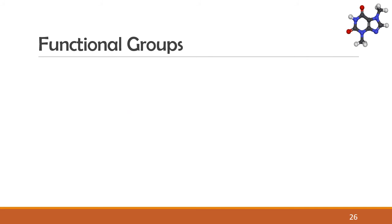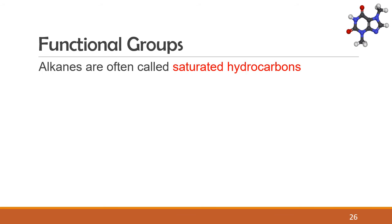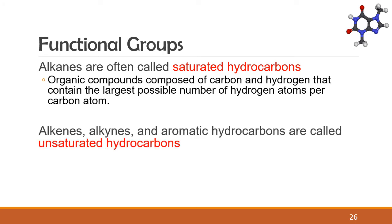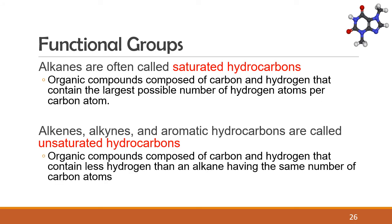There are a couple of important terms you should be familiar with. Alkanes are often called saturated hydrocarbons. This means that these compounds are composed of carbon and hydrogen containing the largest possible number of hydrogen atoms per carbon atom — in simple terms, the carbon atoms are all single bonded to hydrogen. Alkenes, alkynes, and aromatic hydrocarbons are called unsaturated hydrocarbons. These compounds contain less hydrogen than an alkane having the same number of carbon atoms, meaning some carbon atoms form double or triple bonds with other carbon atoms, thereby having fewer bonds with hydrogen.